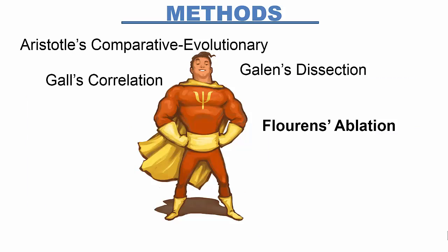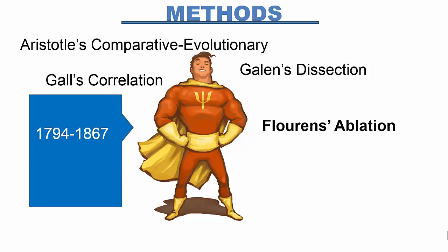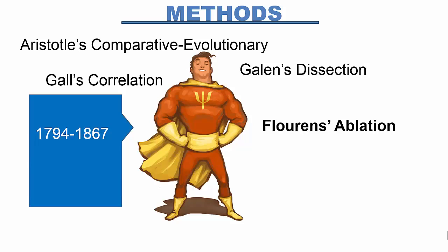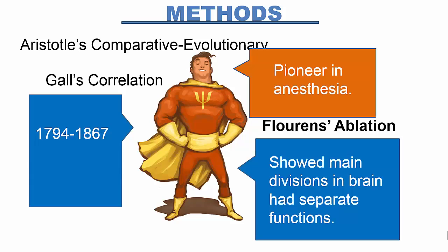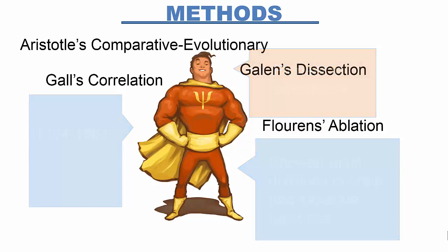Napoleon Bonaparte had heard of Gall's phrenology and selected Jean-Pierre Flourens to prove if Gall's claims were true. Using rabbits and pigeons, Flourens ablated — destroyed — a portion of the brain and observed the effect. He removed an area and then watched to see if the rabbit still hopped.